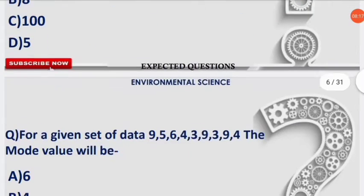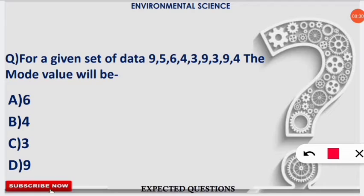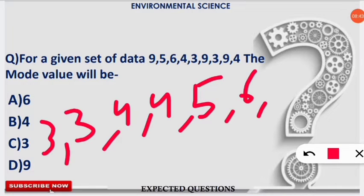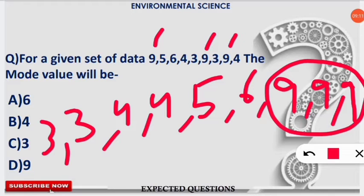The next question asks for the mode of a given data set. The mode is the value that appears most frequently. Arrange the data in increasing order: 3, 3, 4, 4, 4, 5, 6, 9, 9, 9. The number 9 appears three times, which is the most frequent. So 9 is the mode value and the correct option.